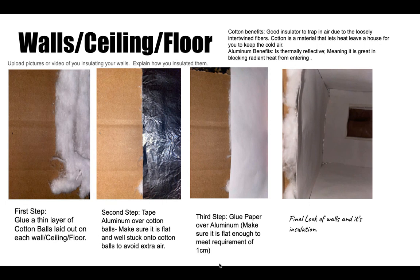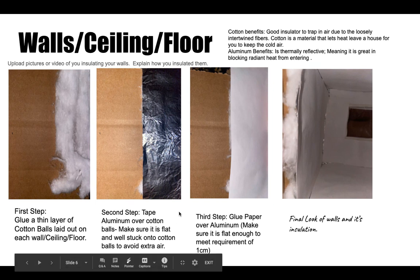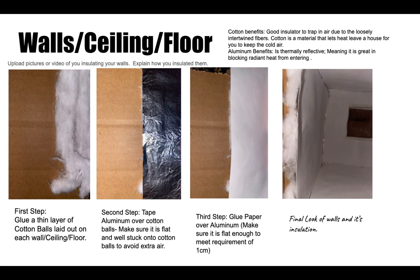I used cotton because I figured it was a great insulator to trap in the air because of the intertwined fibers it contains, and I know that cotton is the material that lets heat leave the house so you can keep the cold air inside. I used aluminum because it is thermally reflective, which means it is great for blocking radiant heat from entering.